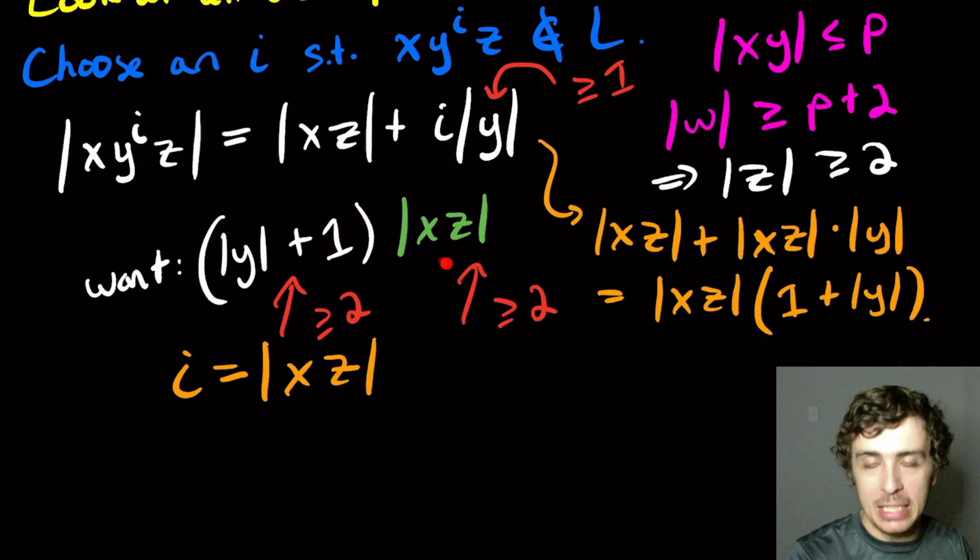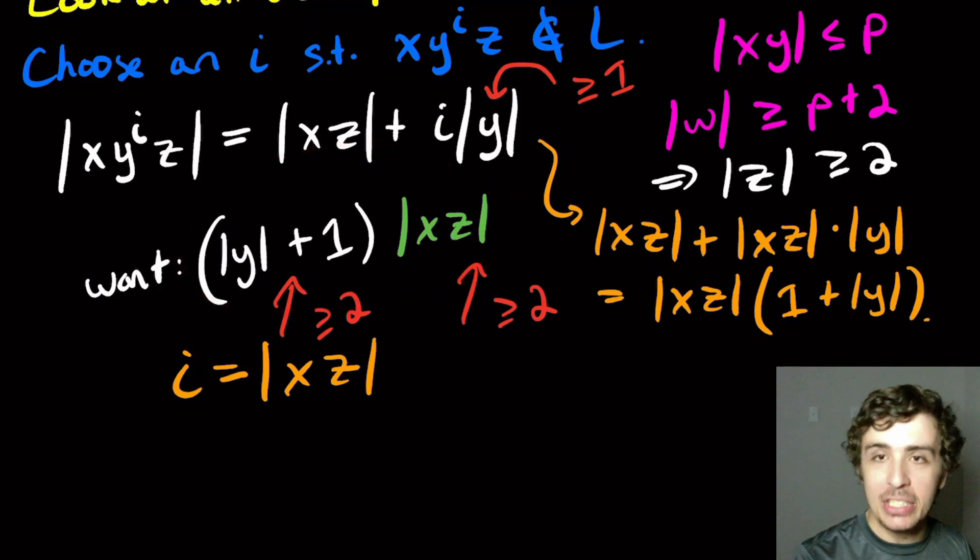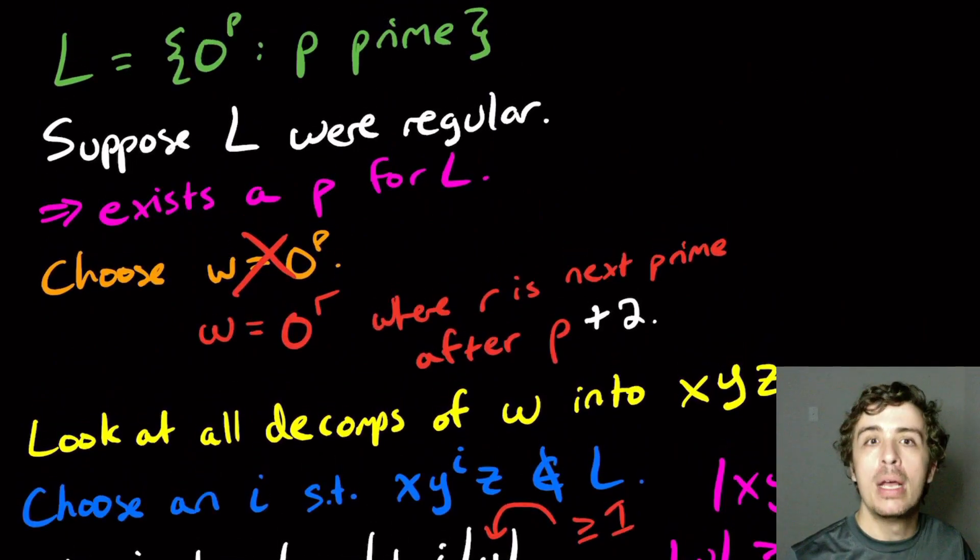We found a value of i. We constructed something that is some number that's at least two times another number also at least two. So whatever that number is, which is the length of that string, has to be composite, it's not prime. Therefore this string is not in the language. That shows that the language is not regular because if it were, it would always be prime, but we found an example where it is not a prime.